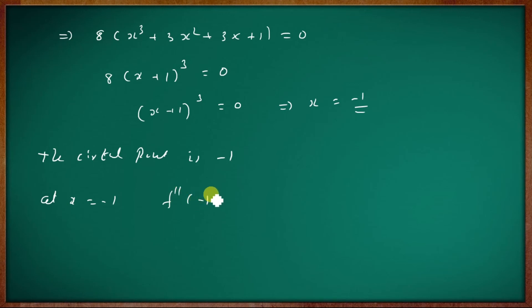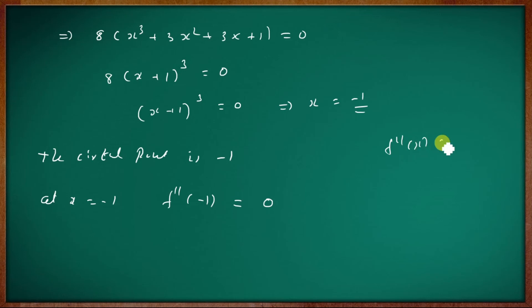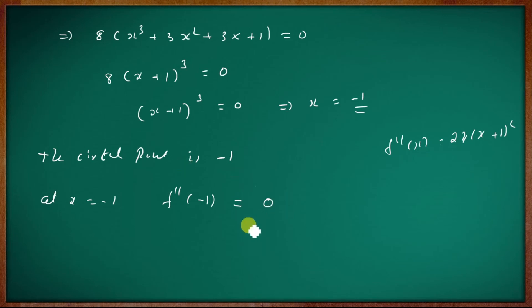At x equal to minus 1, evaluating f double dash of minus 1. The second derivative f double dash of x is equal to 24 times x plus 1 all squared. So f double dash of minus 1 is equal to 24 times 0 squared, which equals zero. Hence, by the second derivative test, the result is inconclusive.